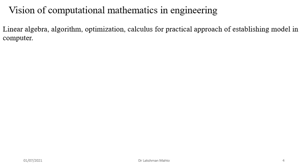To get an optimal model we need optimization. You may already know this from class 12: to optimize a function of one variable, take the first derivative and equate it to zero. For a function of several variables, the first derivative becomes the gradient. The second derivative condition for checking maxima or minima is replaced by the Hessian matrix for functions of several variables.